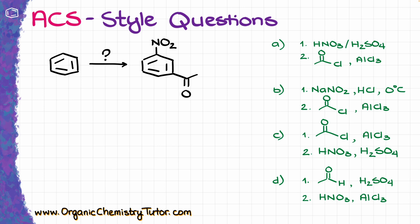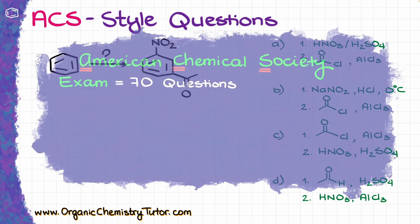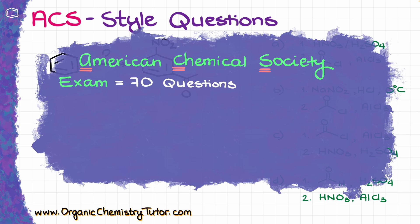If you are a chemistry student in a Northern American institution, chances are you are going to be taking the ACS final at the end of the second semester of your organic chemistry sequence. The ACS test is going to be a 70-question exam where all questions are multiple choice, and each question is going to have four options.